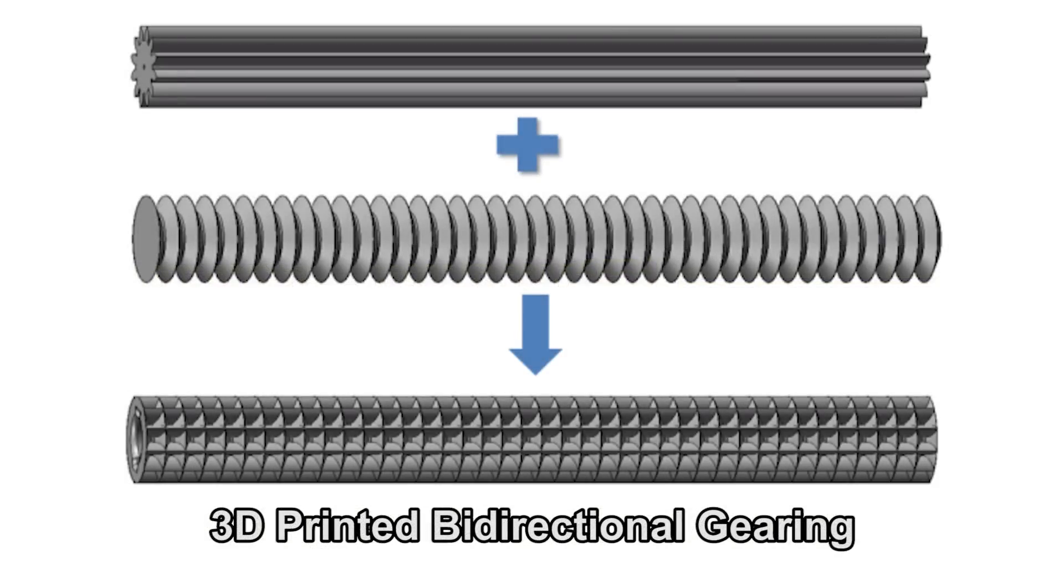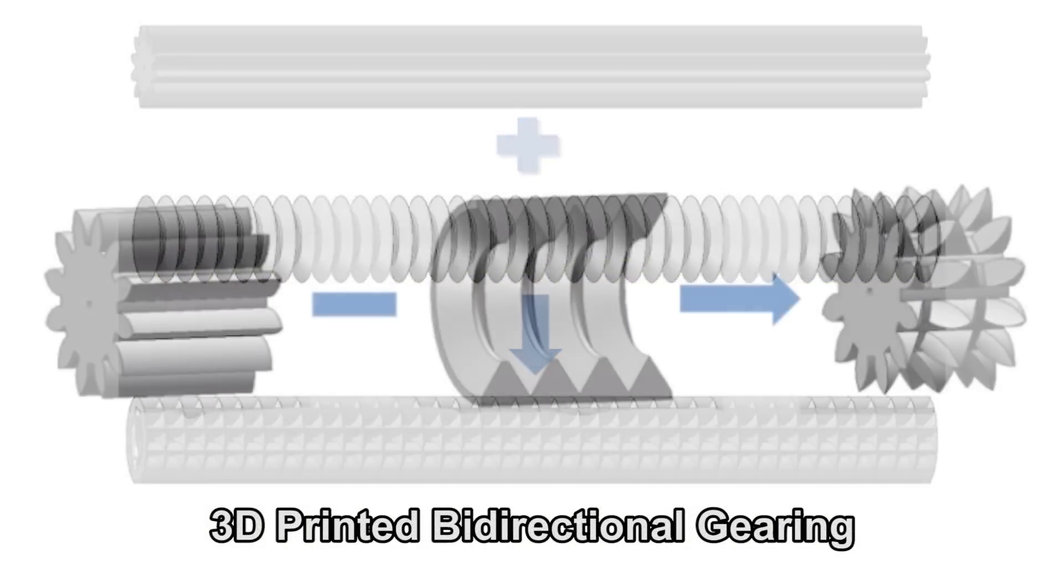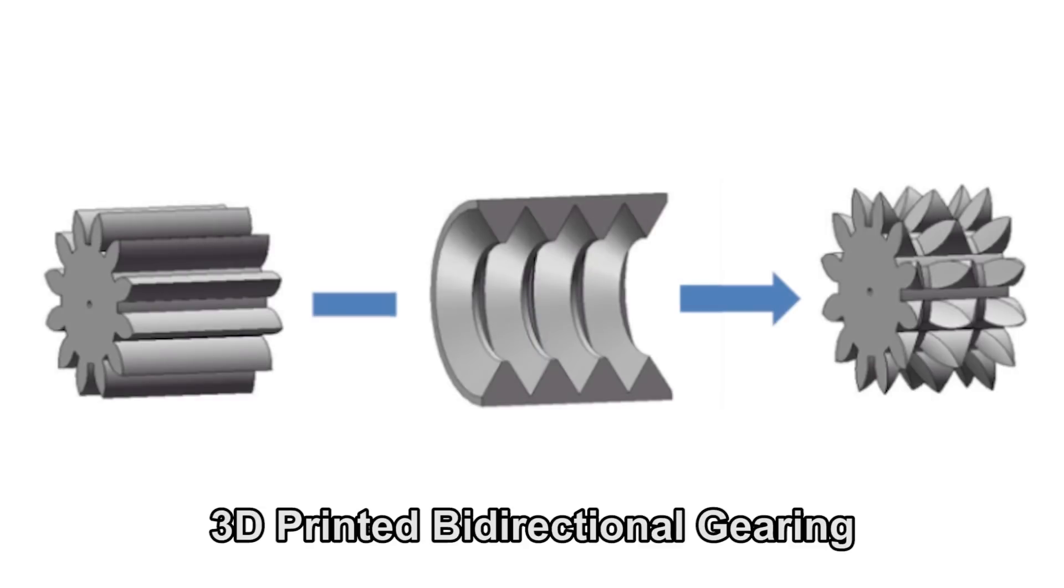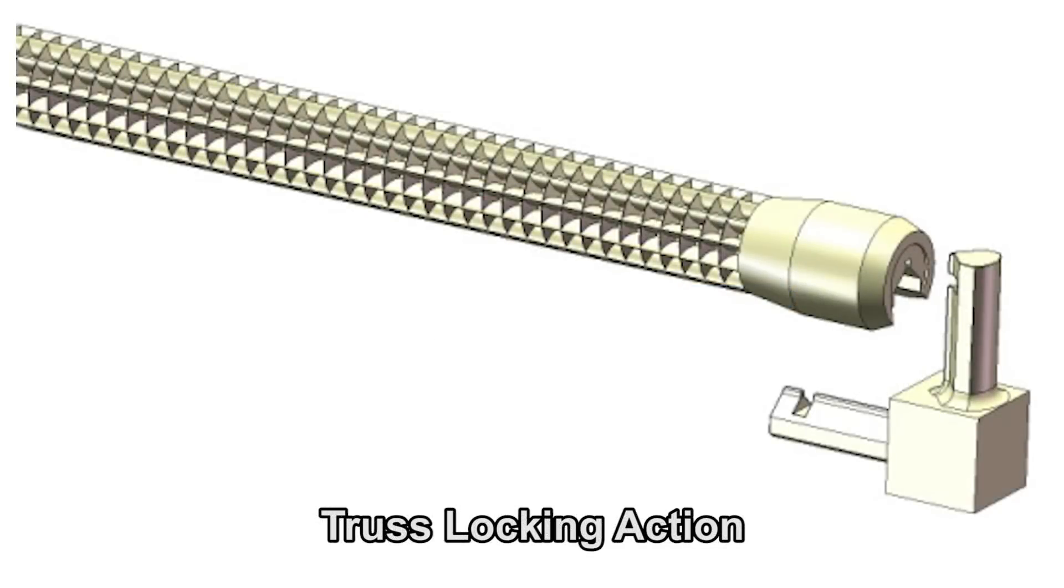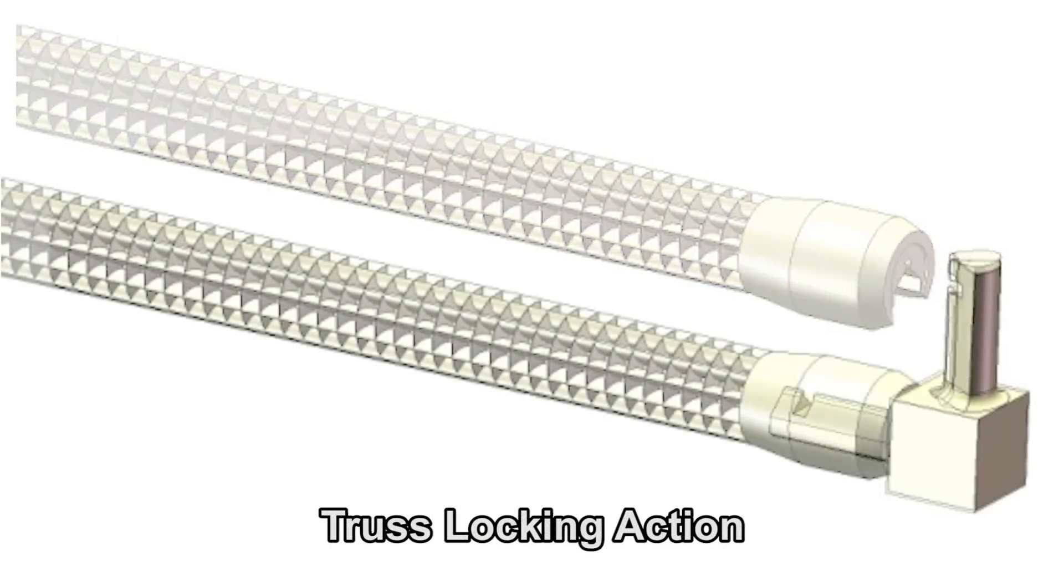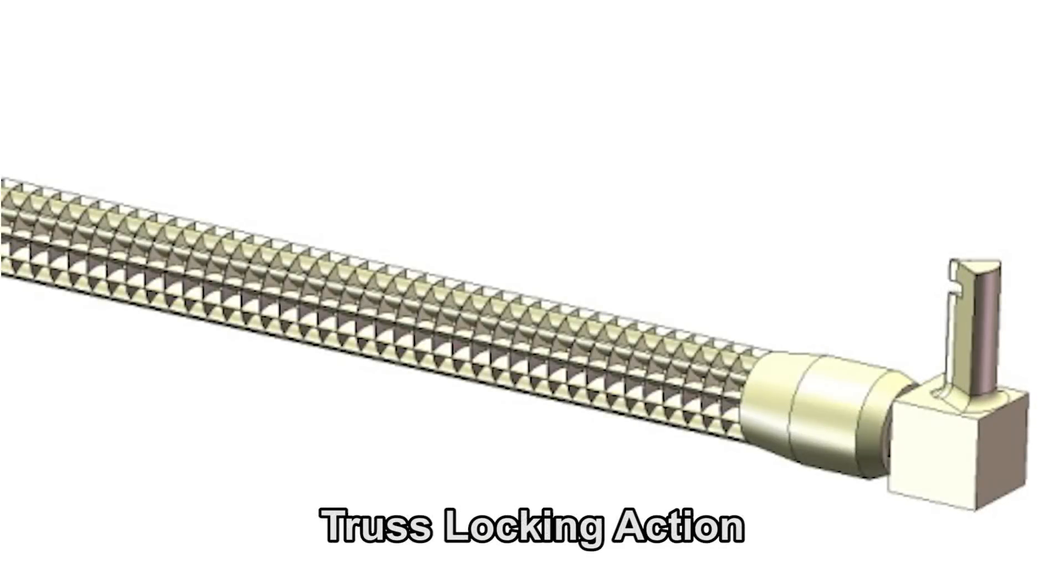The 3D printed bi-directional rods and gears on the robot were developed using the method shown here. The truss can be locked in and out of place by the robot as shown in this animation.